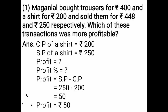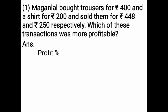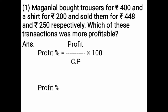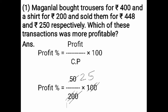After finding the profit of the shirt, find the profit percent. The formula is profit upon cost price multiplied by 100. Substitute the values: profit of shirt is 50, upon cost price of shirt is 200, multiplied by 100. Cancel both zeros on numerator and denominator. Divide 50 by 2: the answer is 25%. Profit percent of shirt is 25%.